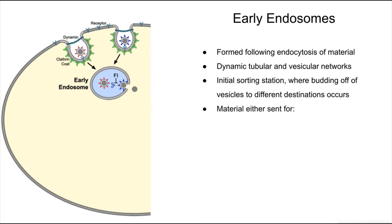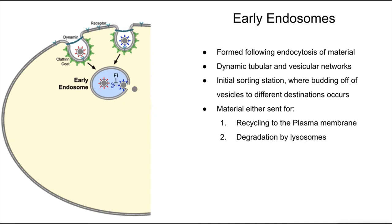Most of the recycled materials are housekeeping receptors, which are responsible for the uptake of materials useful for the cell, such as iron or cholesterol. These receptors must be taken back to the cell membrane for additional rounds of reuptake, whereas the substrates are sent down the pathway for degradation. This leads us on to our next compartment.